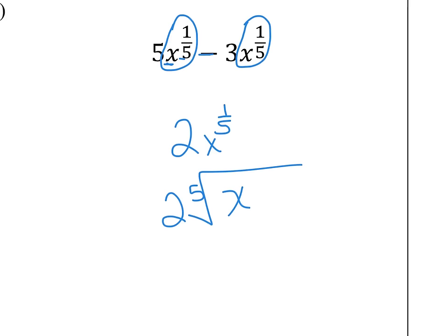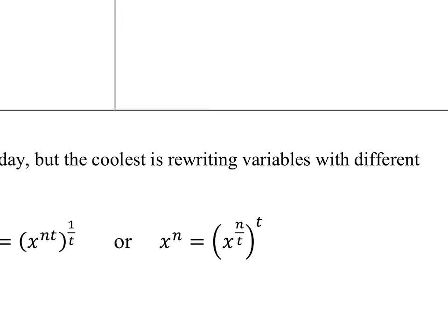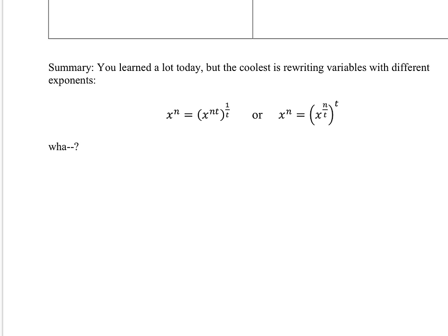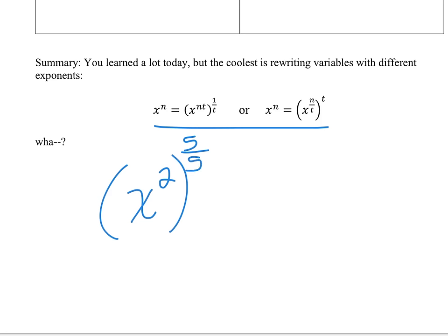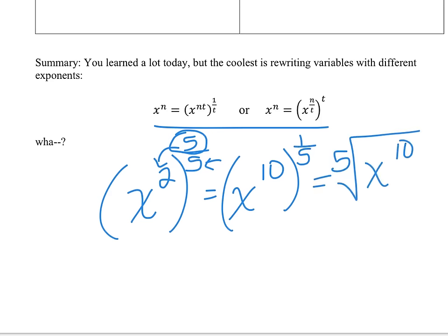That's really it — the major concept of today. It may take practice, but the basic idea is this: if you have x squared and raise it to the first power, you can write that first power as 5 over 5. You can rewrite this as a radical by taking that 5 and multiplying it in — the 5 stays on the outside, so it becomes x to the 10th. Then the 1/5 power means it's the fifth root of x to the 10th. That's the same as x squared — we've just raised it to the 5 over 5 power.